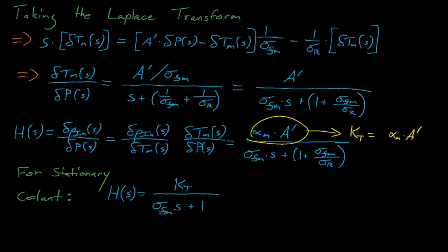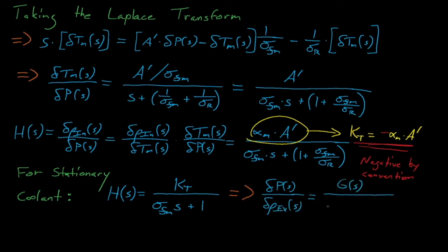We can multiply this expression by alpha-m, the moderator reactivity coefficient, to arrive at the feedback transfer function, where the constant k_t is defined as a-prime times alpha-m. Since the moderator reactivity coefficient alpha-m is typically negative and we like having positive constants, convention leads us to redefine k_t as a-prime times the negative of the moderator reactivity coefficient. This has the convenient side effect of transforming our feedback reactor transfer function into a form that has a 1 plus g(s)h(s) term in its characteristic equation, which very conveniently allows us to analyze our reactor stability using Bode plots.